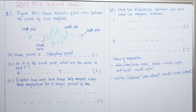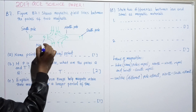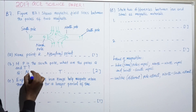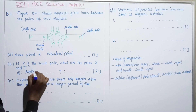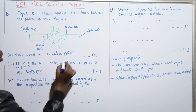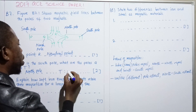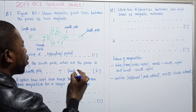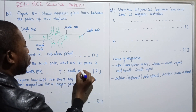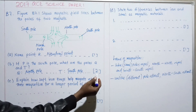So after explaining that, we have determined that Q is the north pole and T is the south pole.